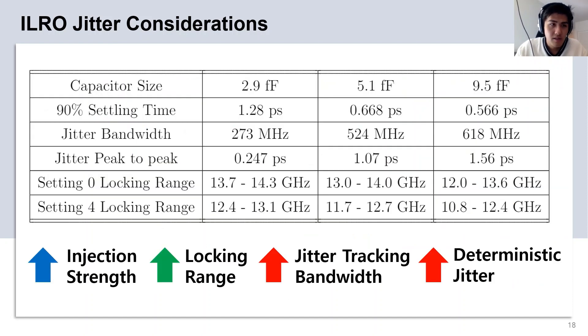Overall, the design trade-offs are summarized here in this table. Ultimately, while we can increase the injection strength, which increases locking range, this also increases the jitter tracking bandwidth of the ILO, which ultimately leads to an increase in the deterministic jitter of its output. For our design, we want to minimize the deterministic jitter of the PI output, which in turn means a focus on the minimum injection strength ILO, which sacrifices locking range.